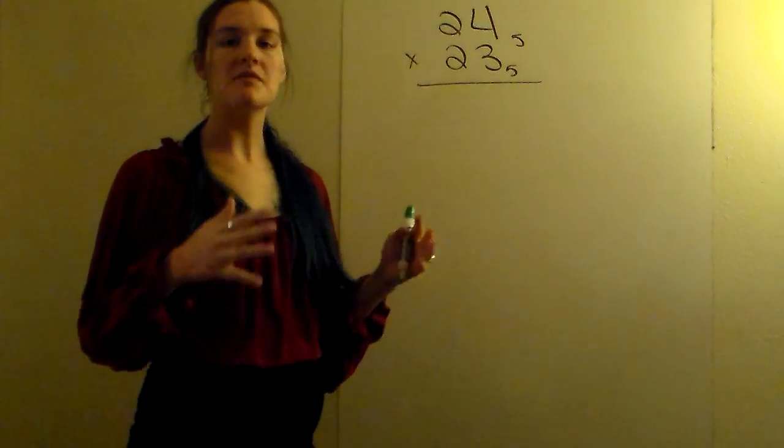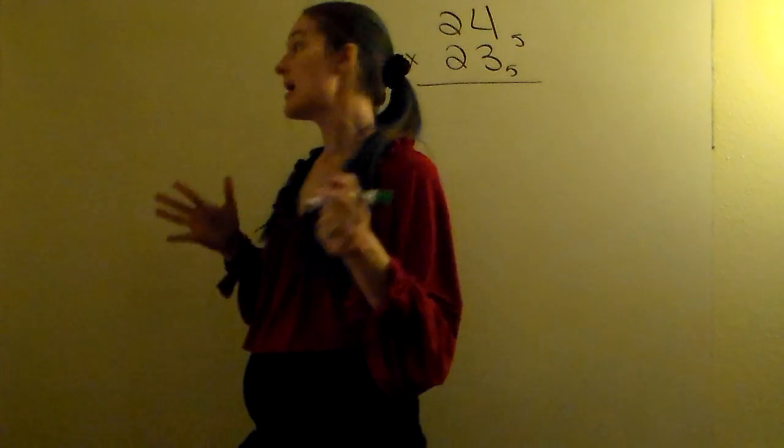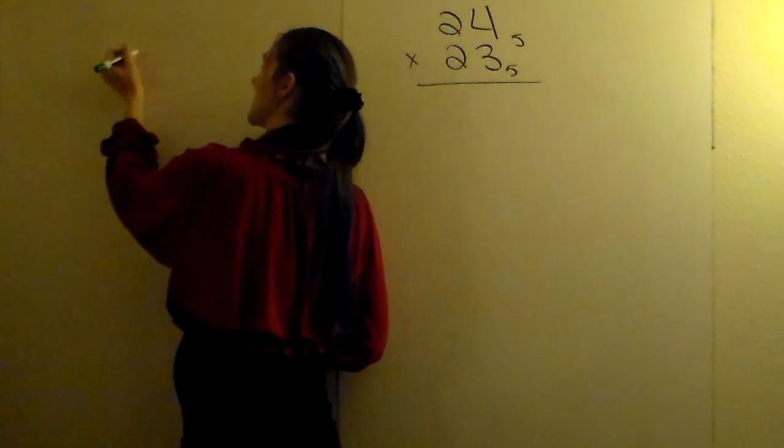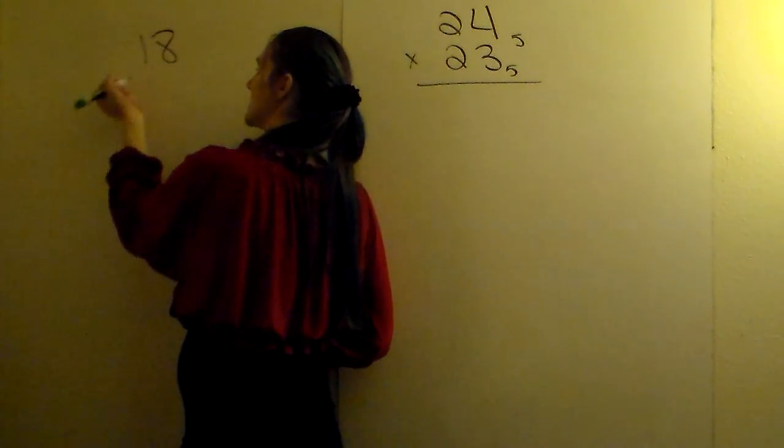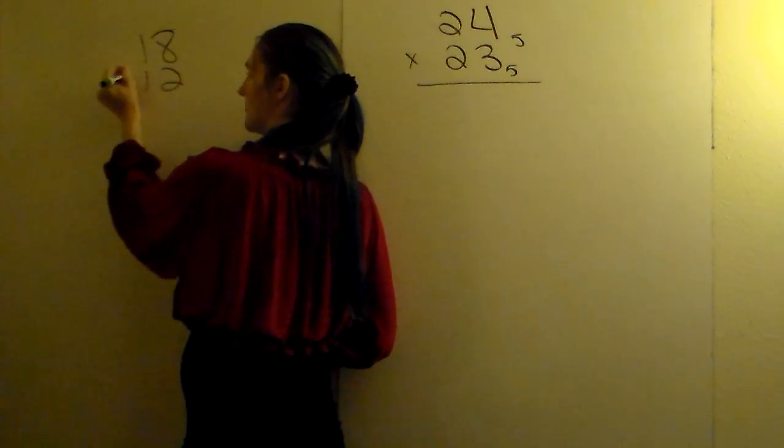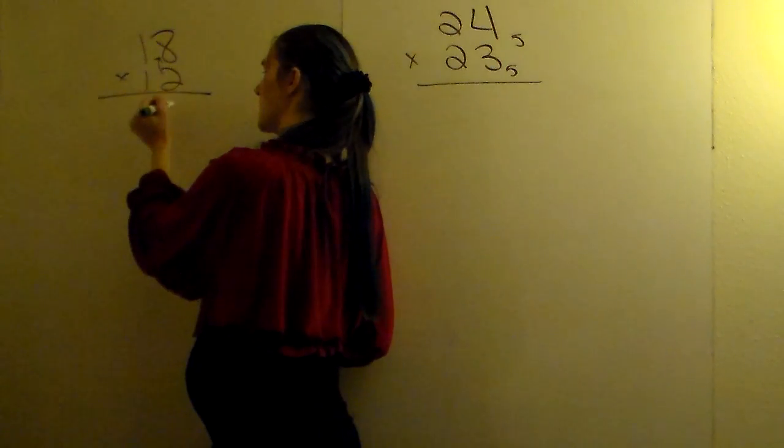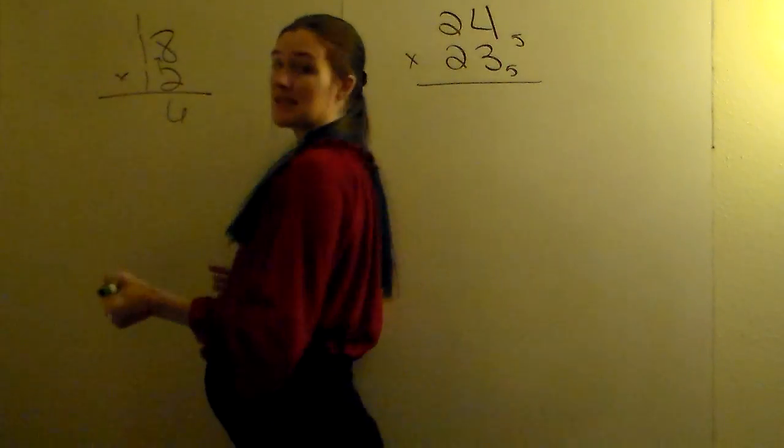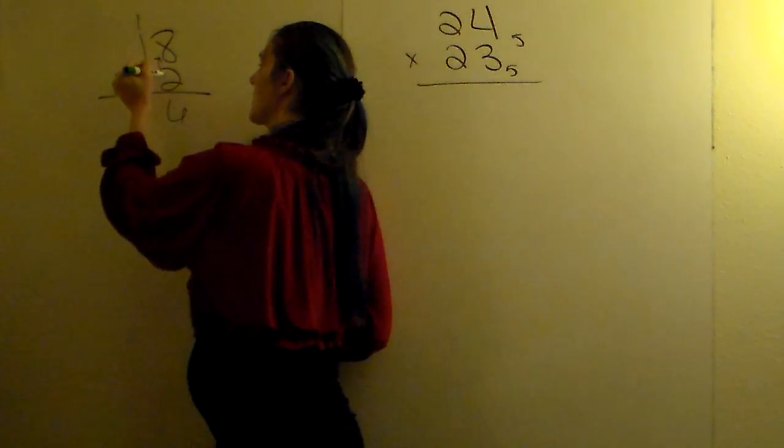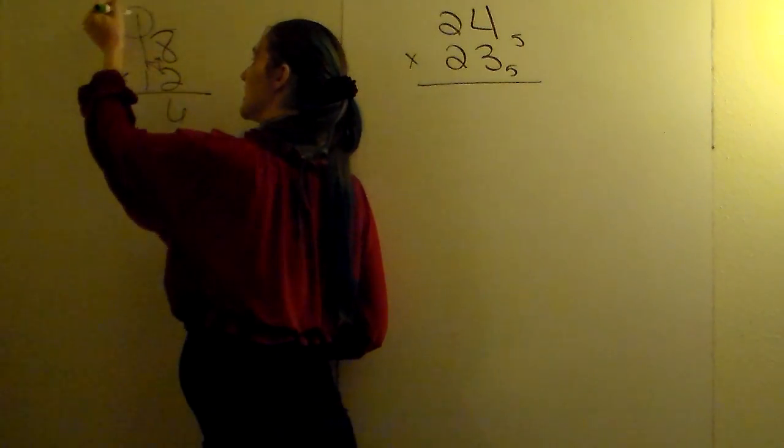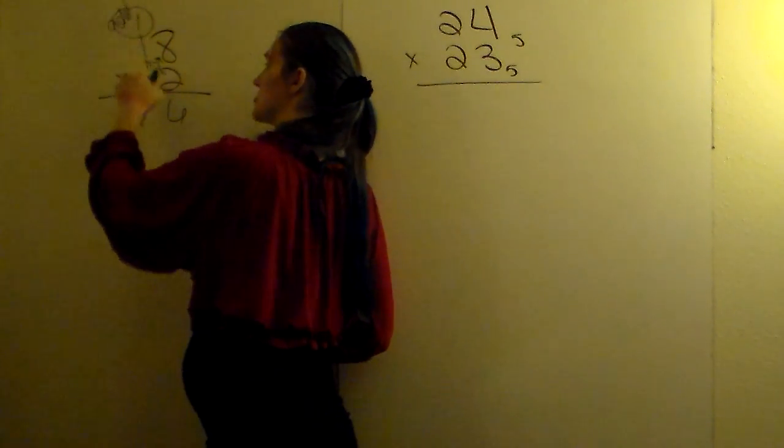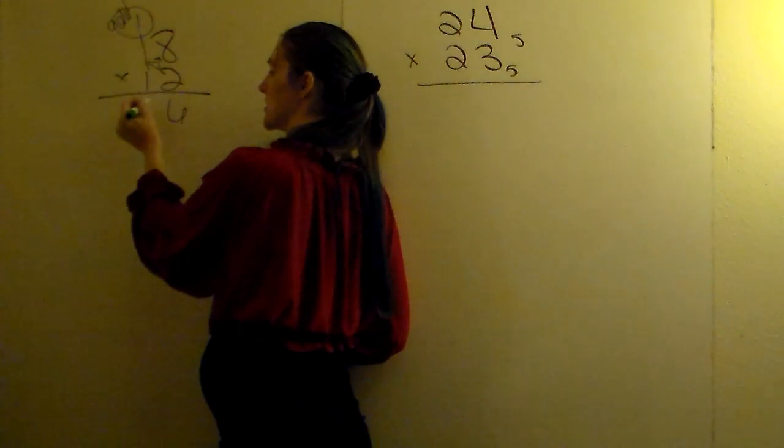And what you're going to do is very similar to normal base 10. So in base 10, if I did 18 times 12, what I do is take the 2 times 8, gives me 16, carry my 1, 2 times 1, and then I add the 1. So 2 times 1 is 2, plus 1 is 3.